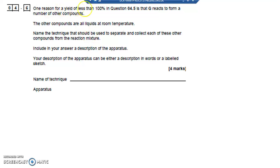Question 4.6. One reason for a yield less than 100% in the previous question is that G needs to react to form a number of other compounds. The other compounds are all liquids. How am I going to separate the mixture of liquids? You can have distillation or fractional distillation.